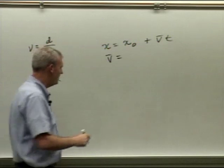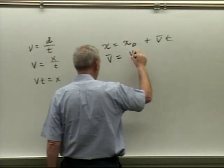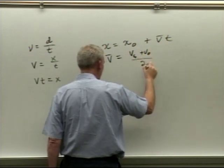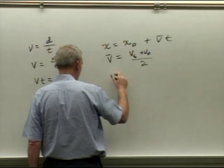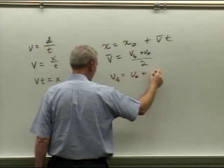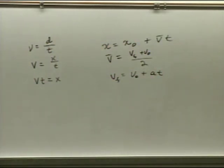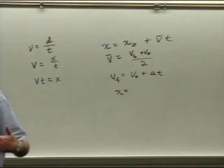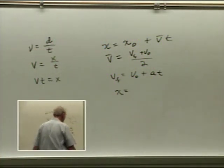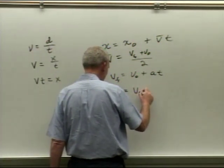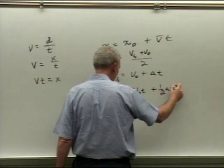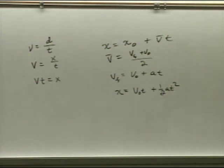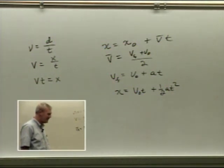The average velocity — and this only works for constant acceleration — is (v_final + v_initial) / 2. The final velocity is v_f = v₀ + at. If the acceleration is negative — slowing it down — you put a minus sign instead of a plus. Then combining x and acceleration, we get: x = v₀·t + ½·a·t². That's a good quadratic function.